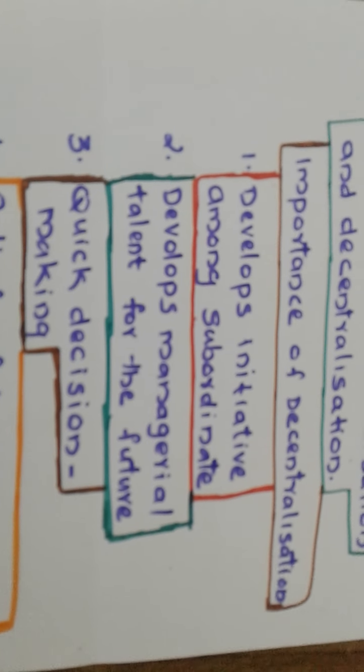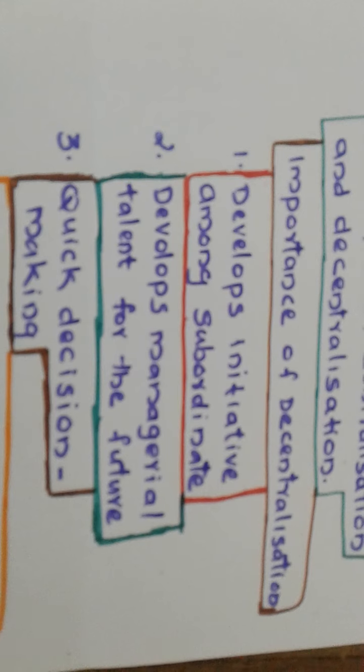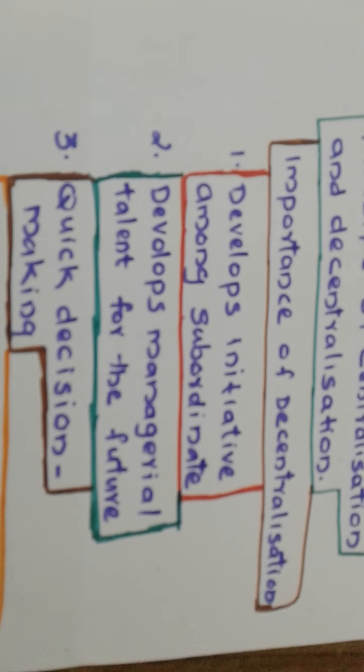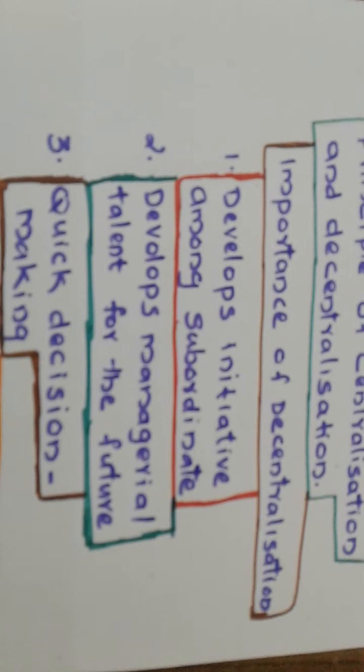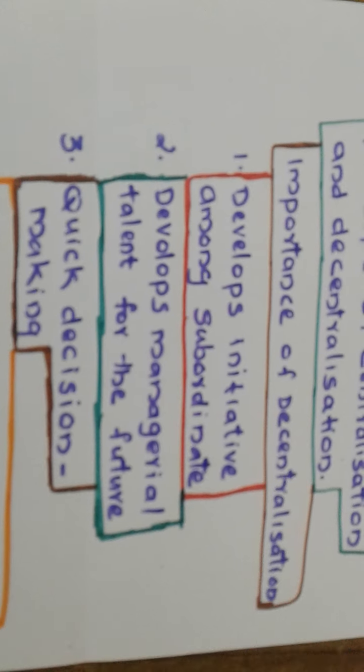Third one: quick decision-making. In decentralized organizations, decisions are taken at levels which are nearest to the point of action, and there is no requirement for approval from many levels. There are also fewer chances of information getting distorted because it doesn't have to go through long channels.